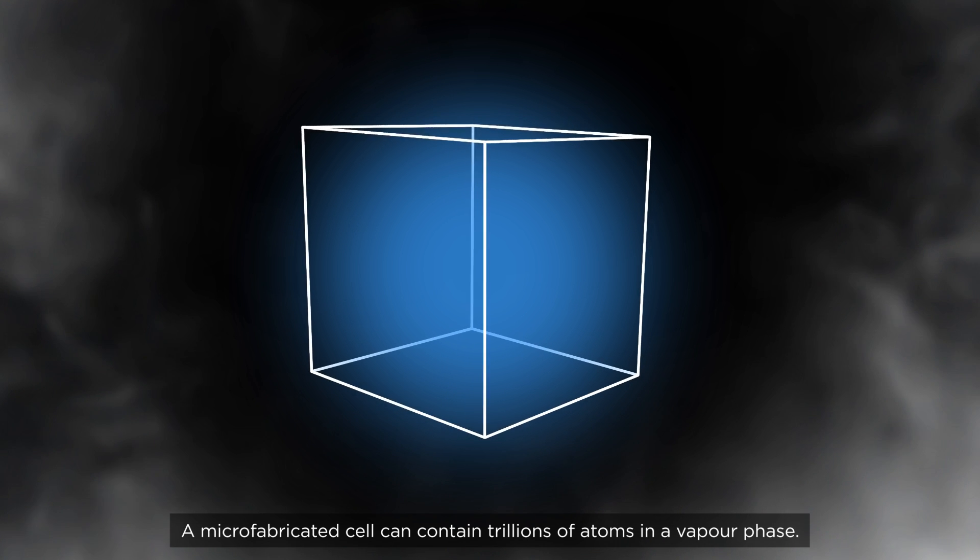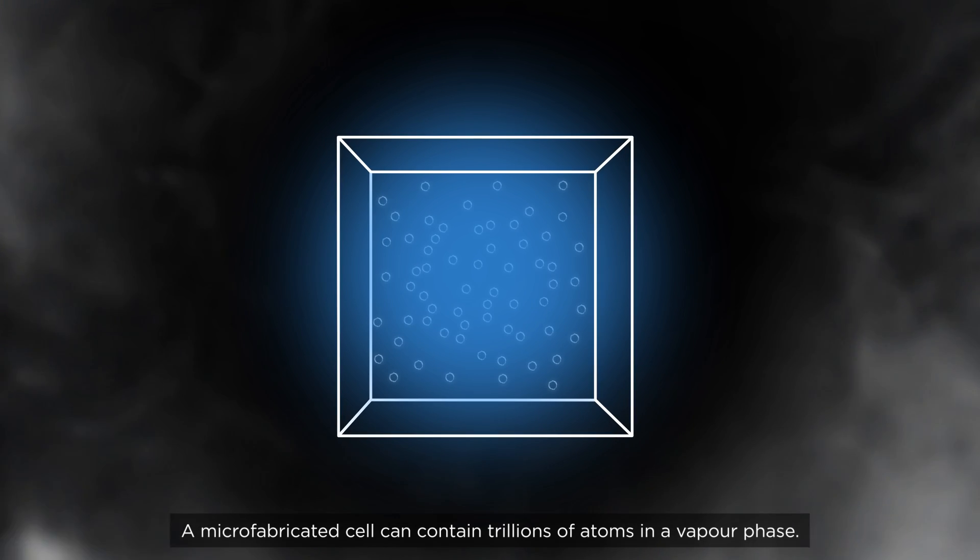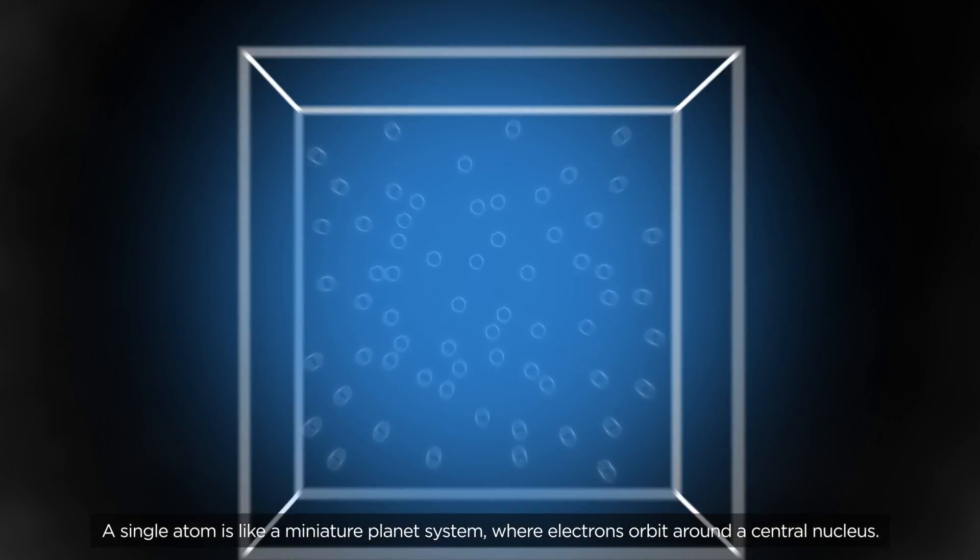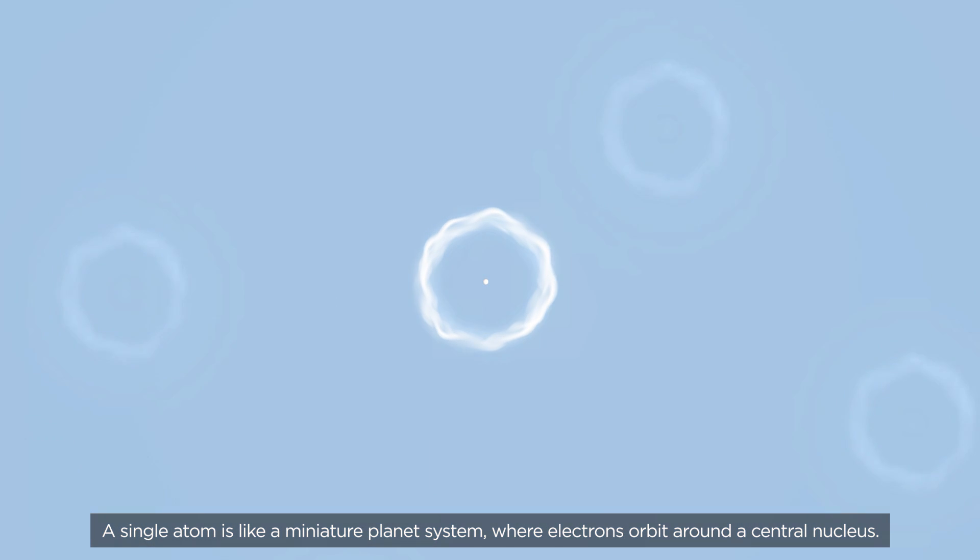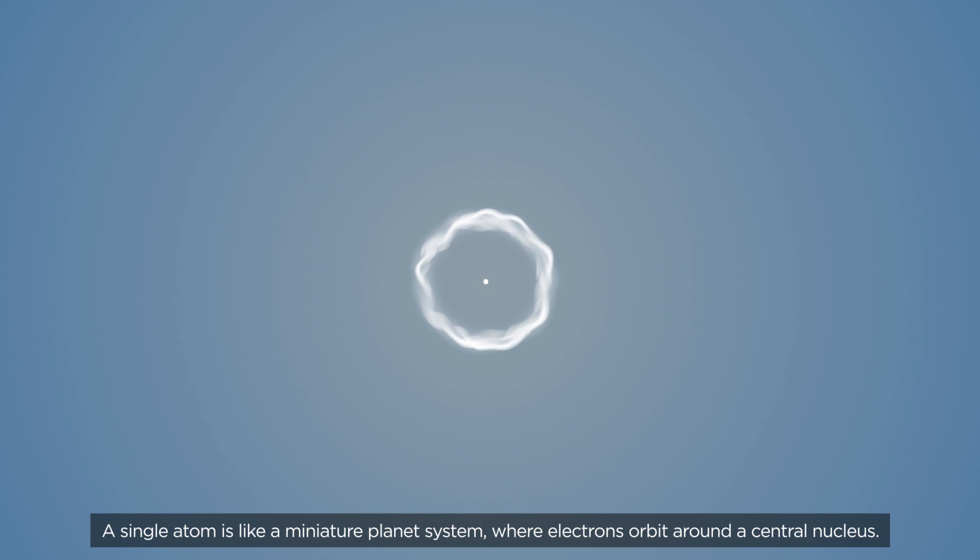A micro-fabricated cell can contain trillions of atoms in a vapor phase. A single atom is like a miniature planet system, where electrons orbit around a central nucleus.